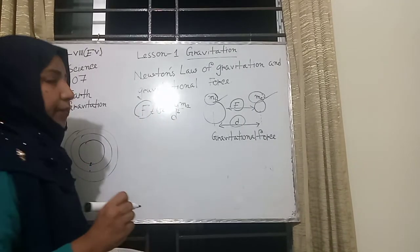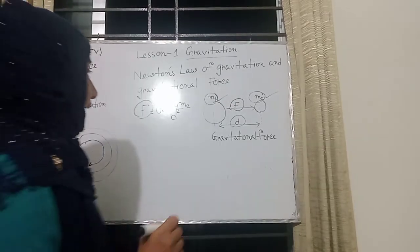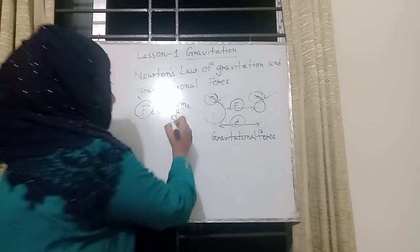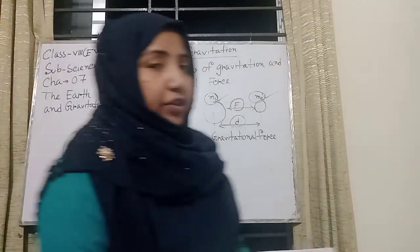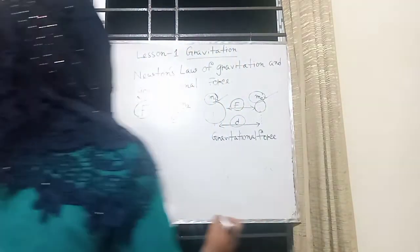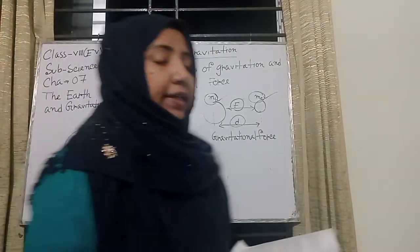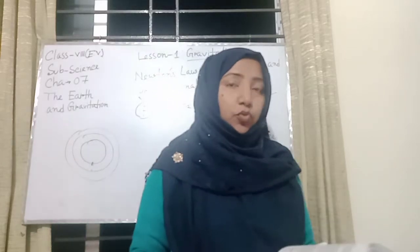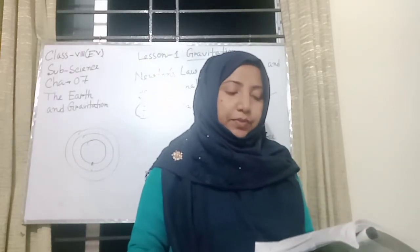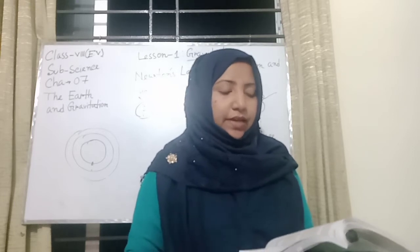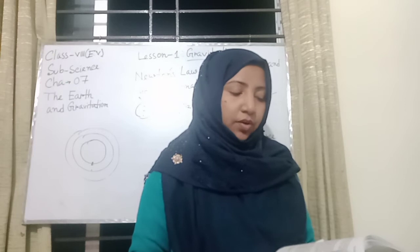Here G is the constant of proportionality. It is called the universal gravitational constant. This means that if two spherical bodies each have mass 1 kg and the distance between them is 1 meter, the attractive force between them is G in magnitude. If the bodies are spherical, the distance is measured from the centers of the spheres.